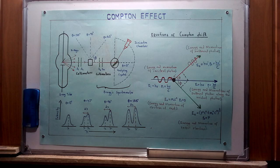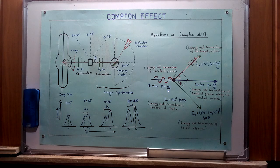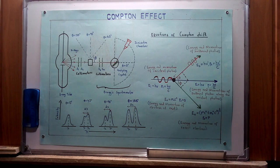This incident monochromatic light is regarded as a photon, which can be considered a relativistic particle traveling at the speed of light. We can derive its momentum, noting that frequency equals c over lambda. Substituting, the incident momentum of this photon is given as hv/c, where v is frequency and c is the speed of light. So hv accounts for energy and hv/c accounts for the momentum of the incident photon.